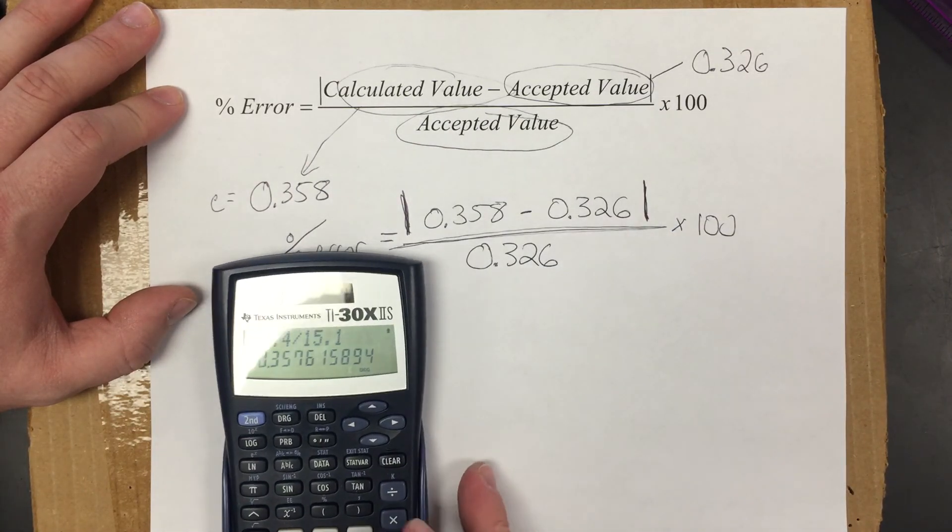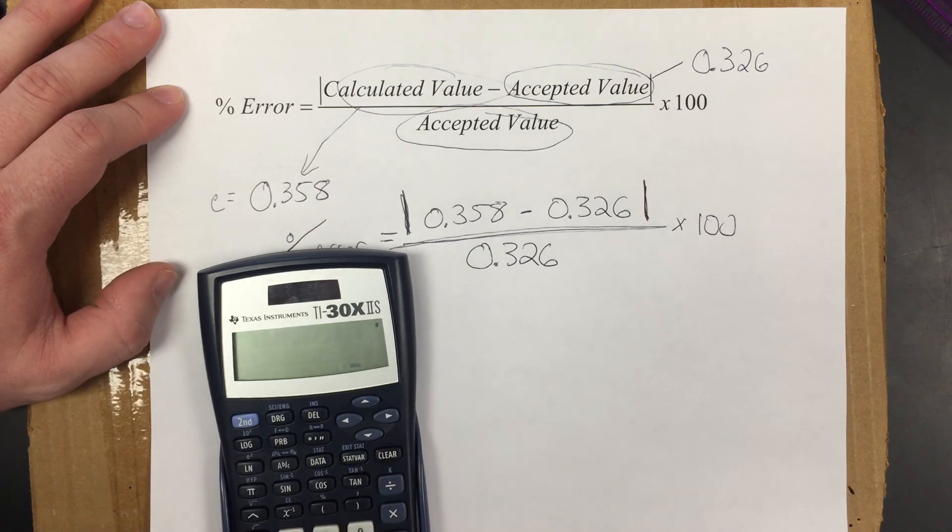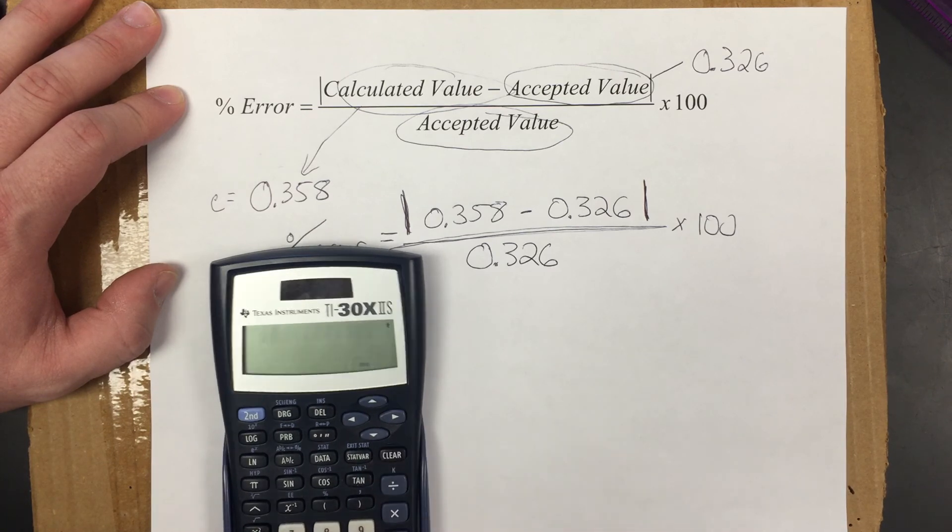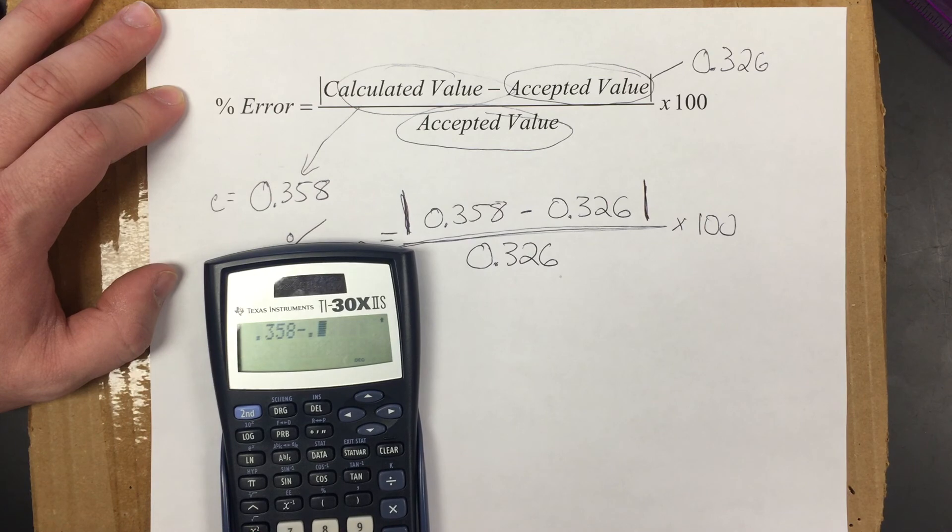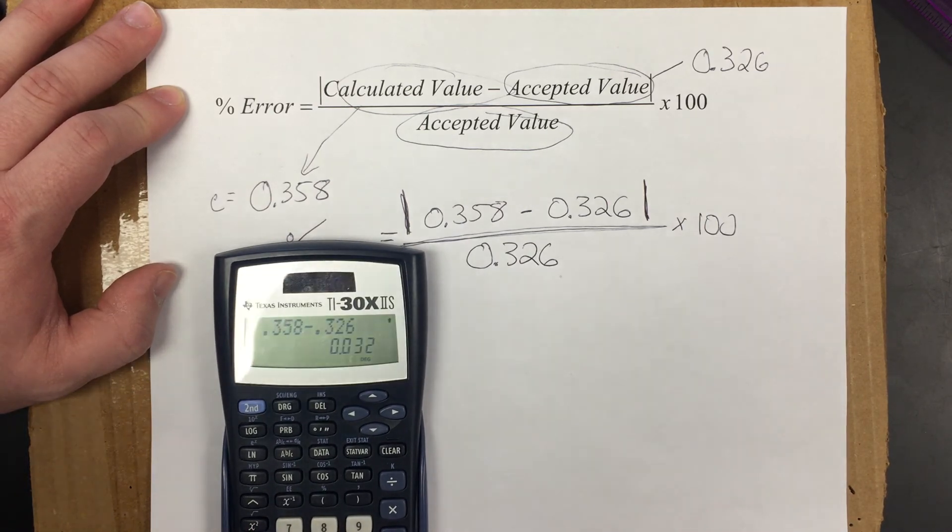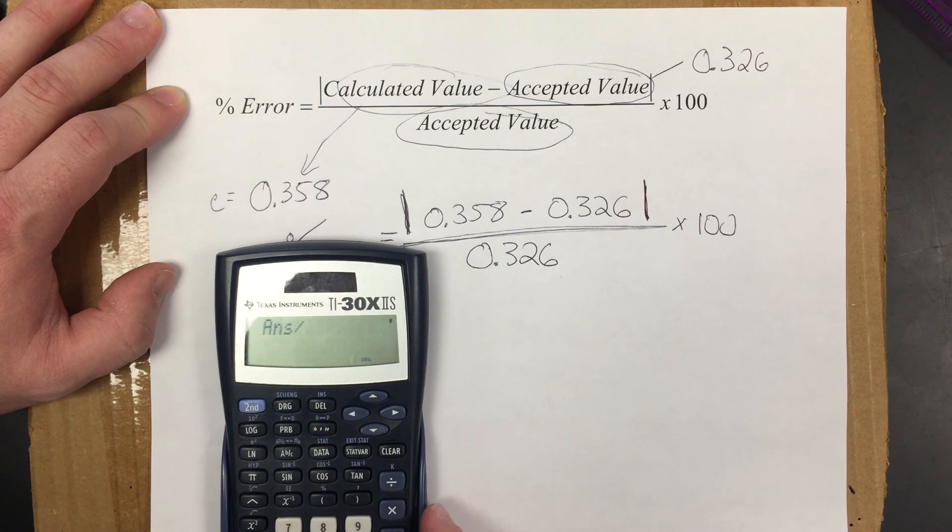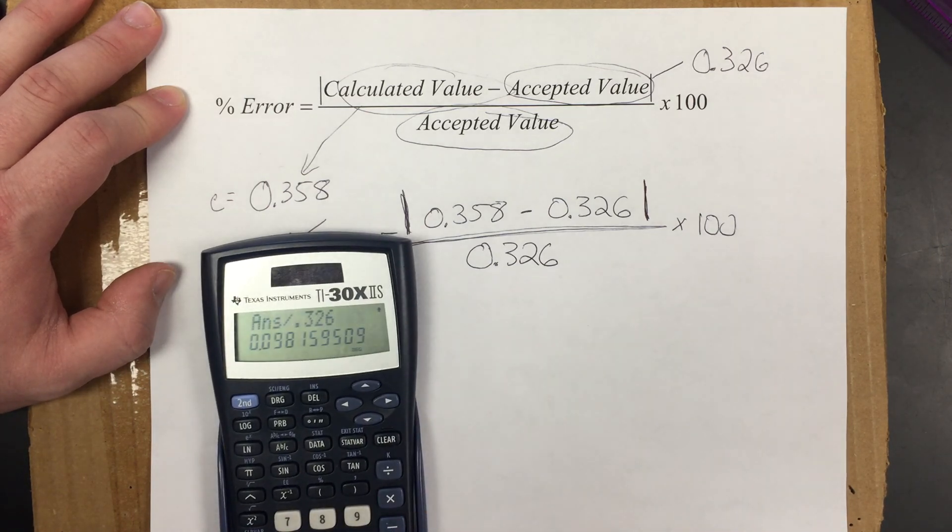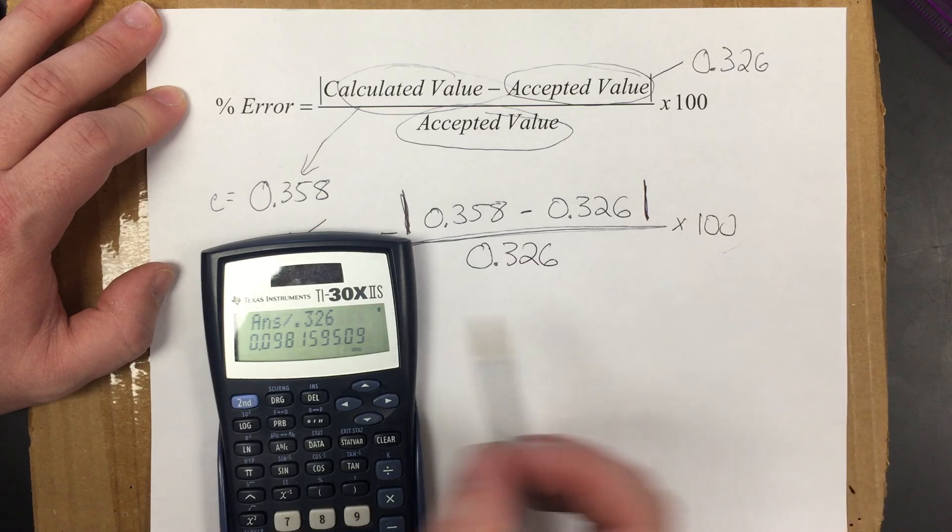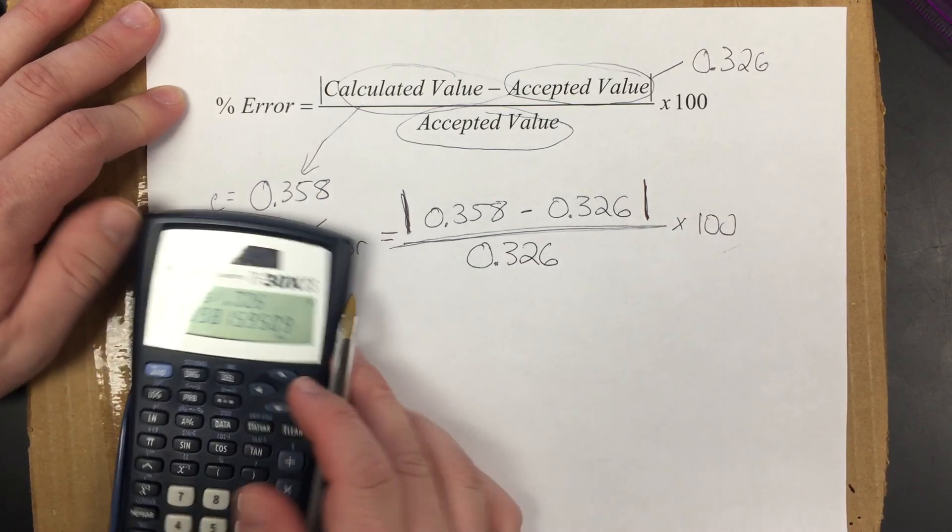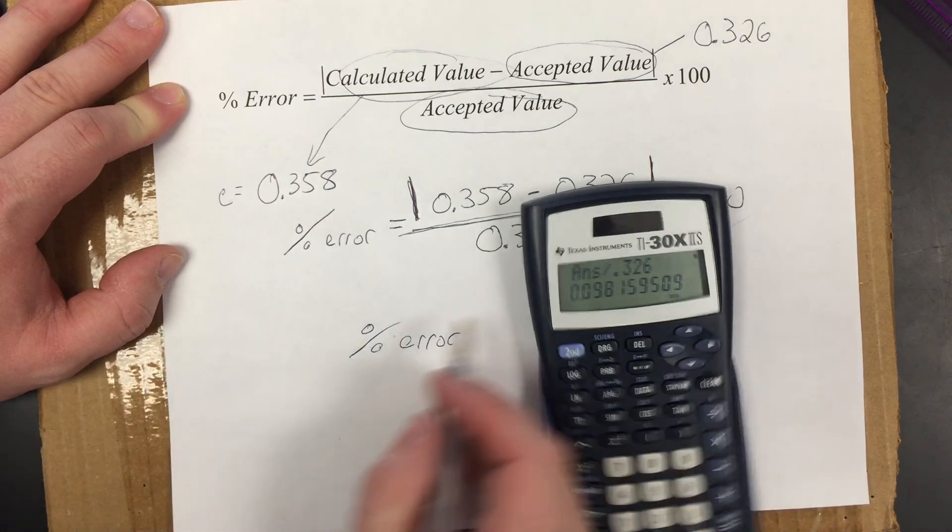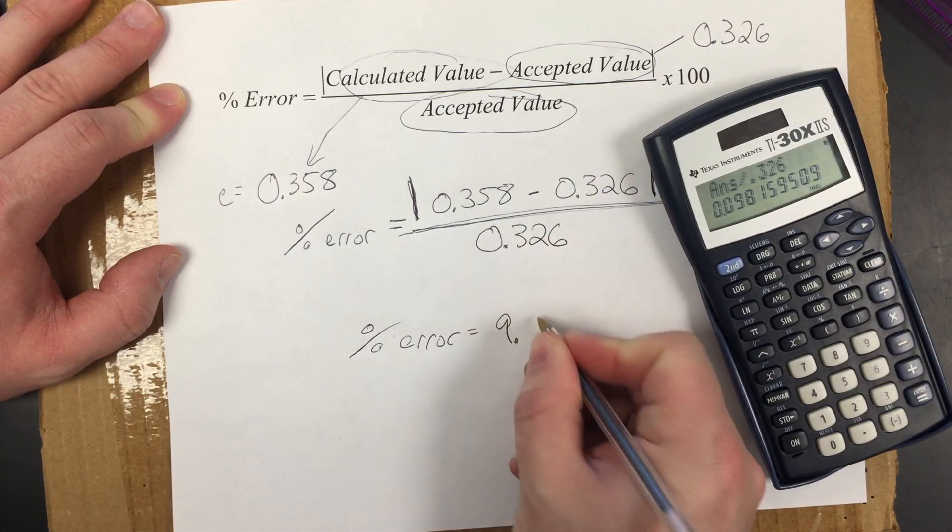So take out my calculator. I can do 0.358 minus 0.326 and I will get 0.032. We're going to divide that by the bottom number here, the 0.326, and we get 0.098. But again we got to do the times 100, so that's just going to move the decimal point two places to the right and I'm going to get percent error equals 9.8 percent.